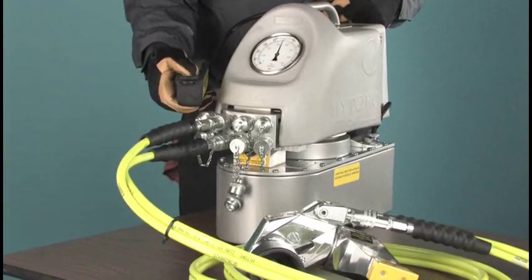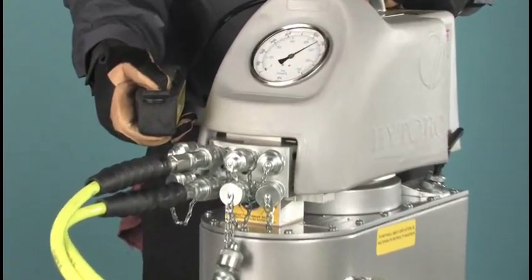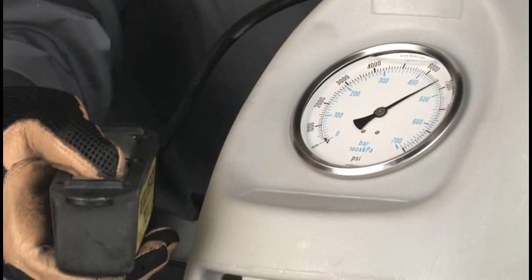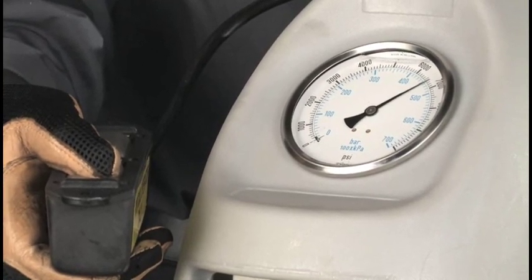To set the pump to 4,000 PSI, with the tool not engaging the nut, turn on and pressurize the pump to see where the pressure is currently set.